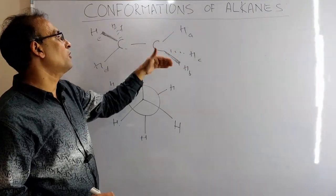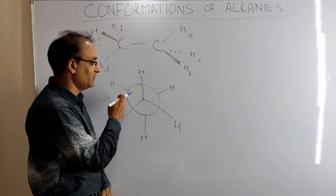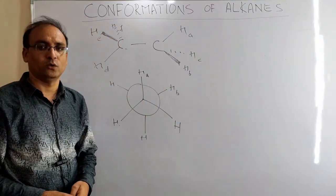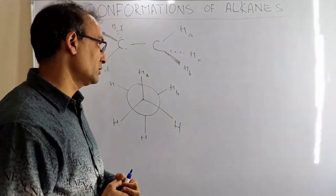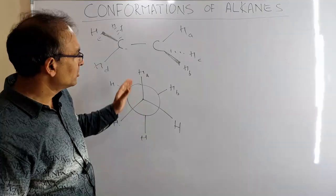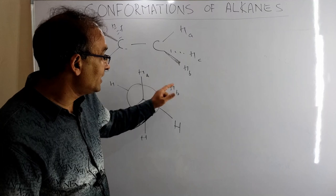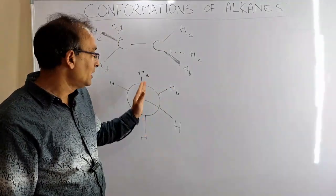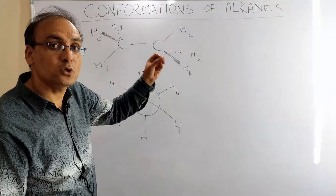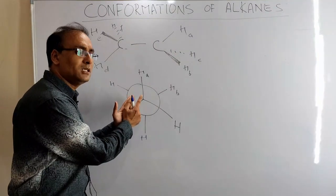One hydrogen can reach another position, then come here, then here, then here. You might think six, but the answer is infinite conformations are possible. Before H-A reaches H-B, it passes through every angle — 1 degree, 0.5 degrees, 0.1 degrees, 0.001 degrees — so all those conformations are possible. This is the most stable conformation.